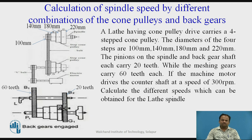If the machine motor drives the counter shaft at a speed of 300 rpm, calculate the different speeds which can be obtained for the lathe spindle. For one speed cone pulley there are four steps; therefore at different combinations of cone pulleys we will get four different speeds.